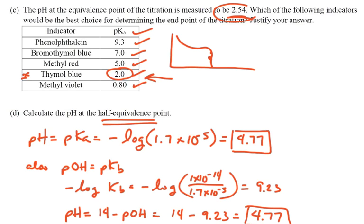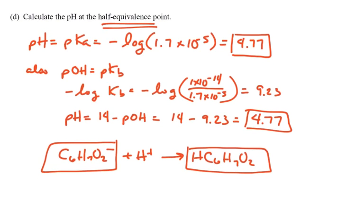Part D: Calculate the pH at the half-equivalence point. That's the easy one. At the half-equivalence point, remember, that's the place where pH equals pKa. So pH equals pKa, and we know the Ka was given in the beginning of the problem as 1.7 times 10 to the minus 5. That's for the sorbic acid. So negative log of that is 4.77.